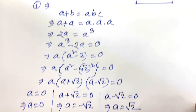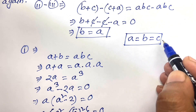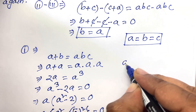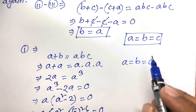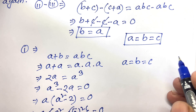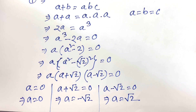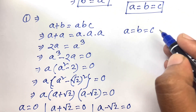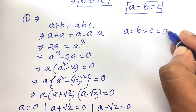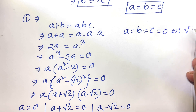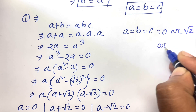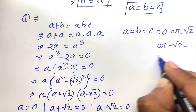We know that A equals B equals C, so A, B, and C are equal. Therefore the value of A is zero, or minus square root 2, or square root 2. So I can say easily ABC equals zero, or square root 2, or minus square root 2. This is the answer.